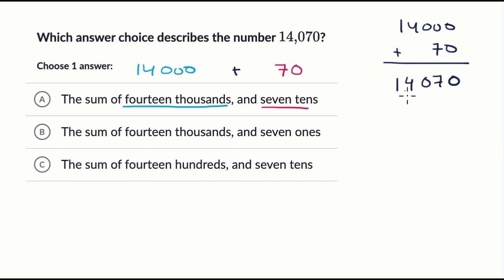I have 14,070, which is exactly the number that they have over here. So we luckily stumbled on, or we looked at choice A, and it was actually the choice that describes this number. But let's look at the other ones and see why that doesn't make sense.